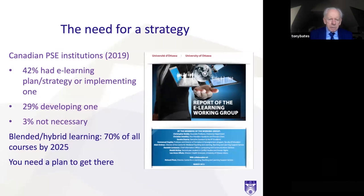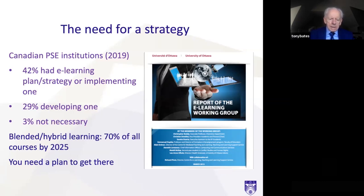In Canada, 42% of universities and postgraduate colleges had an e-learning plan or strategy or were implementing one. Most institutions in Canada are beginning to realize the importance of having a plan for e-learning, and only 3% said one wasn't necessary — these were very small colleges focused on providing a close campus experience. More importantly, blended and hybrid learning will probably constitute 70% of all courses in Canada by 2025, which is why you need a strategy and a plan to get there.